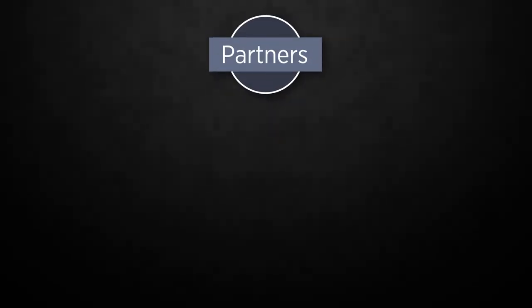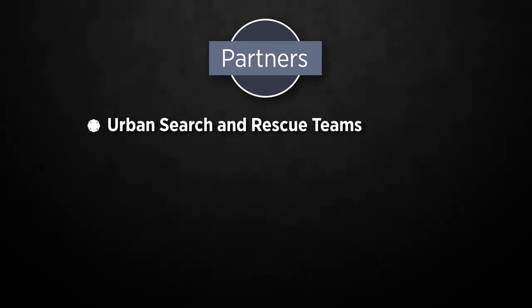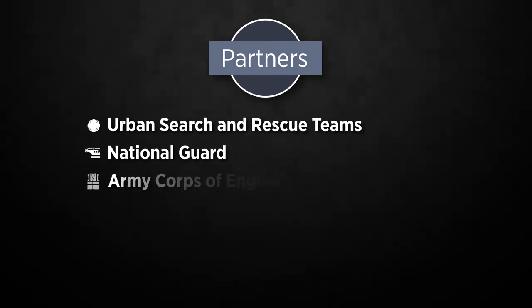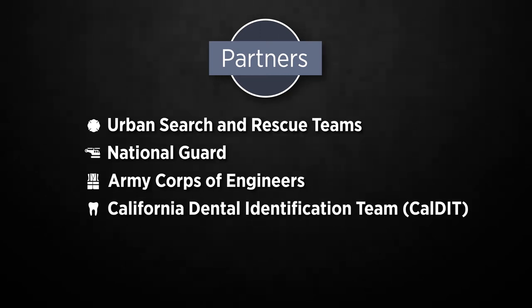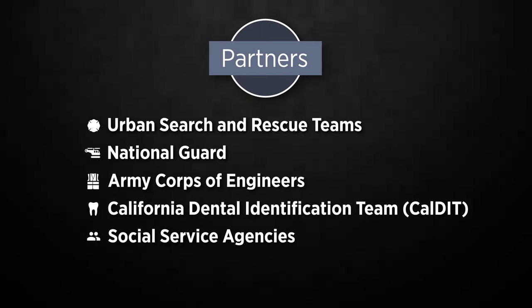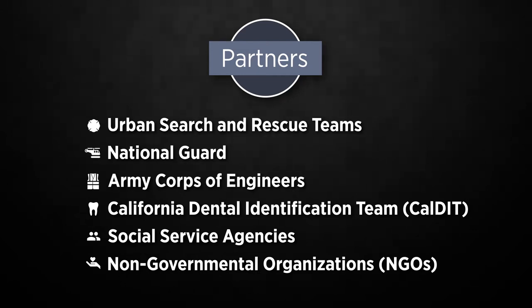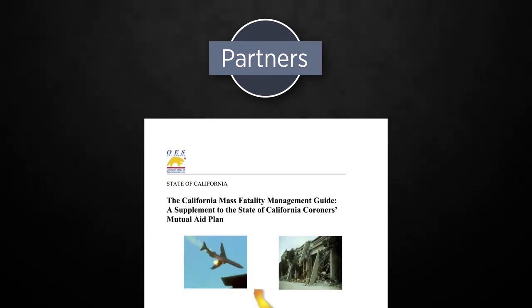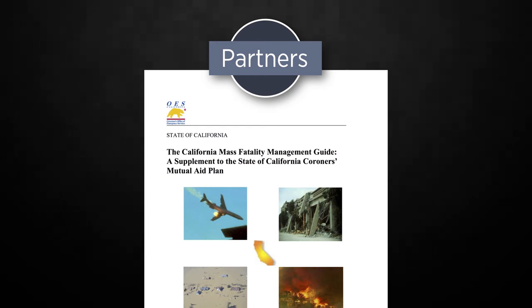You have crematoriums, funeral homes, dentists in private practice that have assisted in the coroner's office, and private companies that provide equipment and software to help manage the fatality management process. Some key partners include urban search and rescue teams, National Guard, Army Corps of Engineers, California Dental Identification Team, Social Service Agencies, and Nongovernmental Organizations, or NGOs. Refer to the California Mass Fatality Management Guide for a comprehensive and descriptive list of partners.